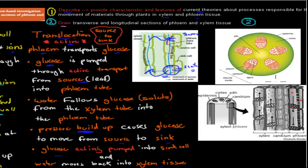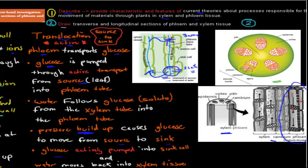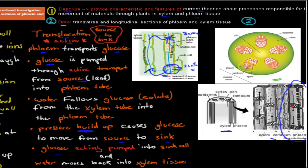You also need to be able to draw a transverse and longitudinal section of phloem and xylem tissue. In a transverse section of the stem, xylem is on the inside and phloem is on the outside. For longitudinal sections, you should know that the phloem contains the sieve tube, sieve plate, and companion cell. This was a quick summary of the last 12 dot points of the second context point for this module.